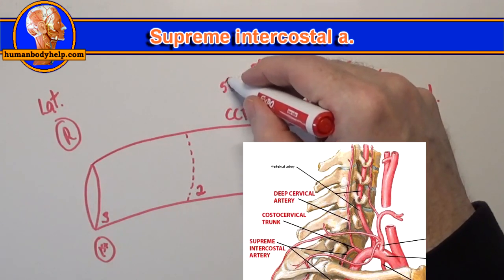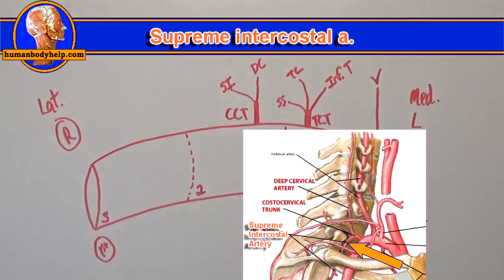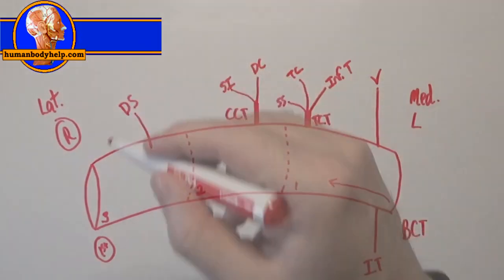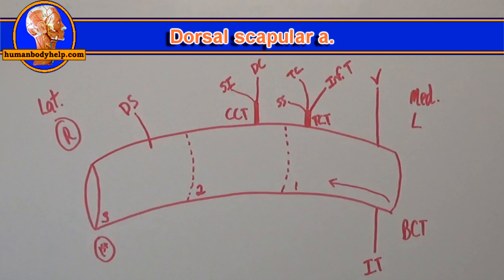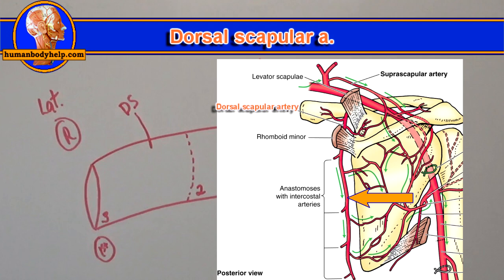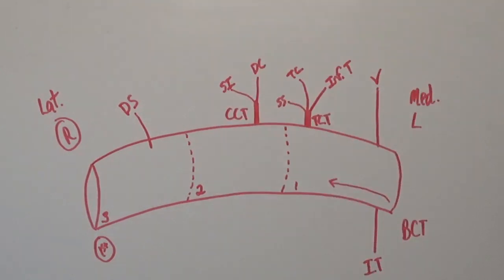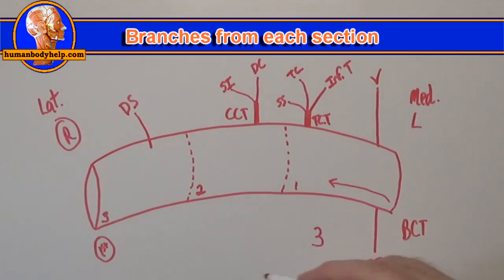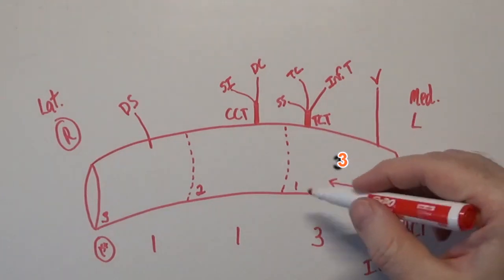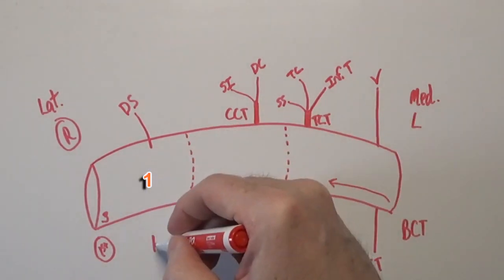The third part of the subclavian artery will have one branch, the dorsal scapular artery. The dorsal scapular artery supplies the levator scapulae, the rhomboids, and the trapezius muscles. So down here I'll write 3-1-1. These numbers represent the number of branches off of each part: one, two, three here, one here, and then one here.